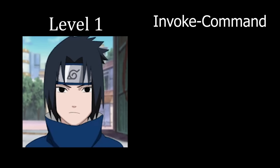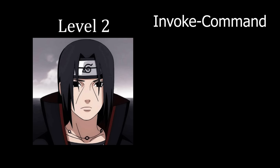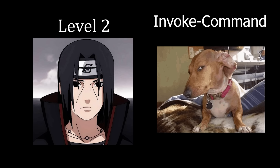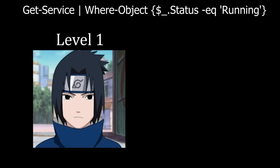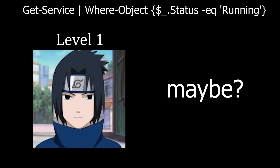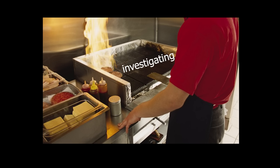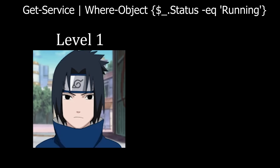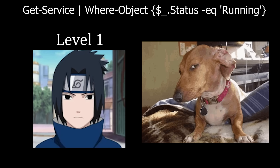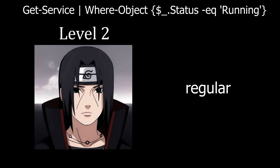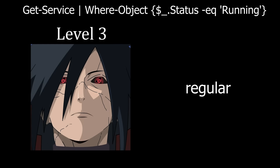On Invoke-Command: Level 1 says it seems like the start of something but doesn't raise suspicion for a SIEM flag. Level 2 doesn't know what invoke means but would mark it suspicious unless there's a deployment script. The senior analyst says this one's also almost always bad. On Get-Service where Status equals Running: Level 1 thinks they're looking for running services — could be malicious or legitimate investigation. Level 2 says it seems like system administrator activities. The senior analyst says this one's completely harmless — it just gives a list of running services.